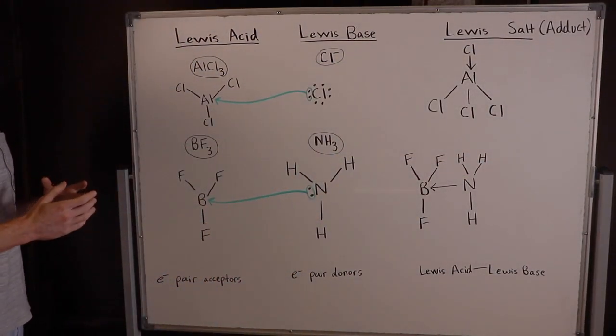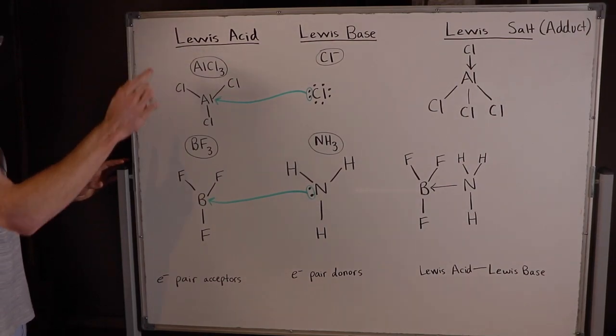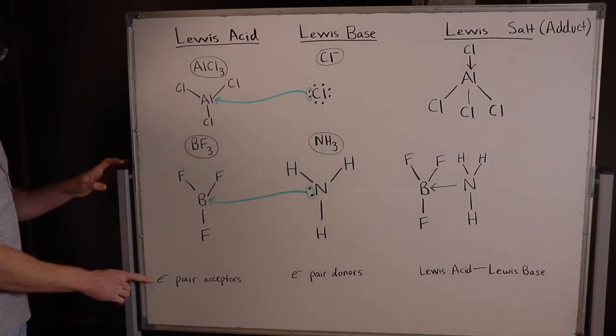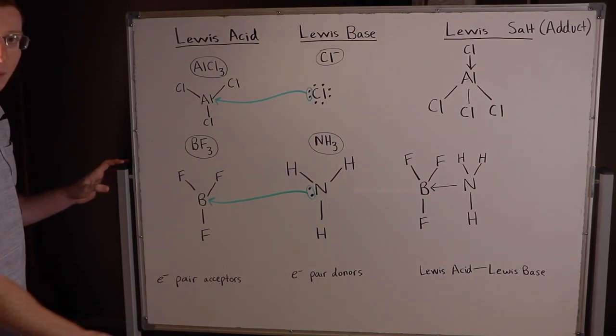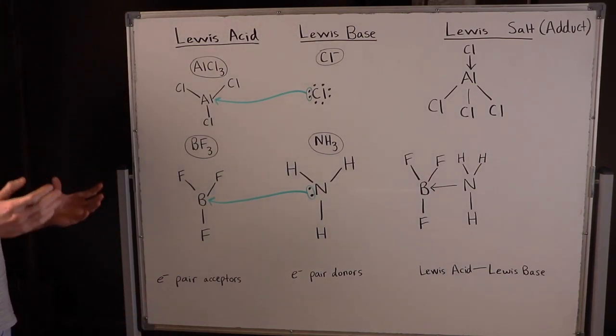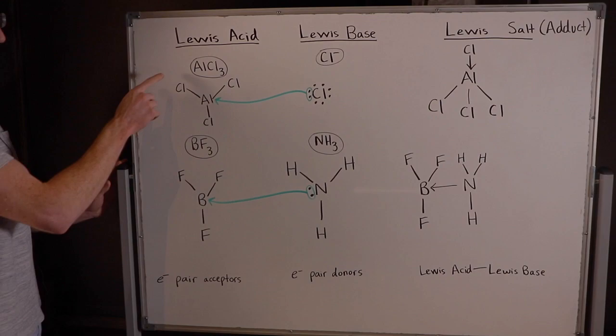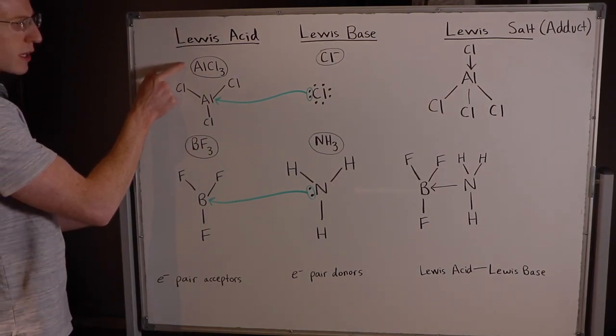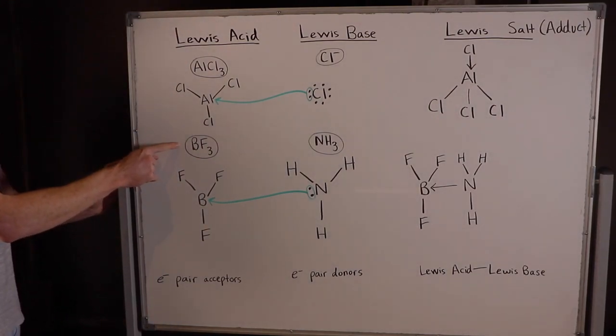The best way to identify a Lewis acid is to first remember its definition. A Lewis acid is something that is an electron pair acceptor. In other words, it accepts electrons. Two examples of Lewis acids are aluminum trichloride and boron trifluoride.